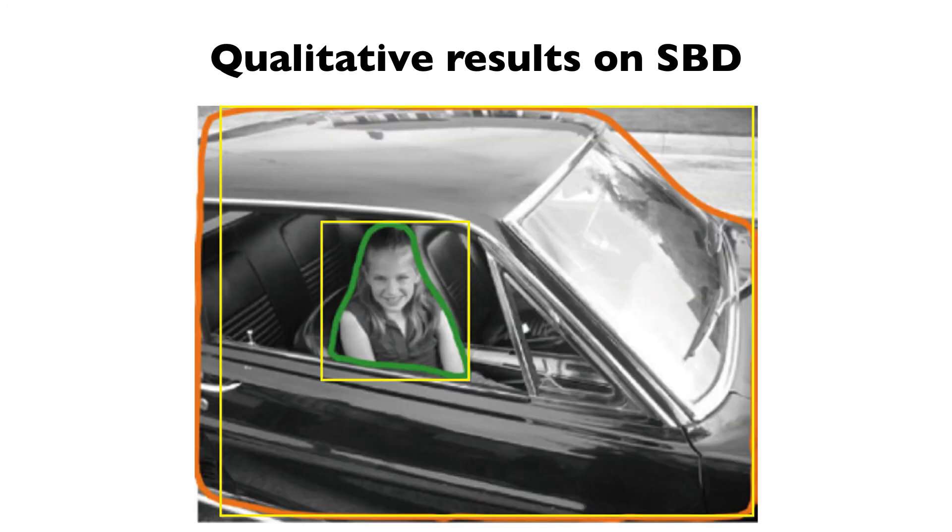Furthermore, the results also show that our approach can handle errors in object localization. For example, in the image, although the detected box doesn't fully enclose the car, our approach recovers the complete car shape.